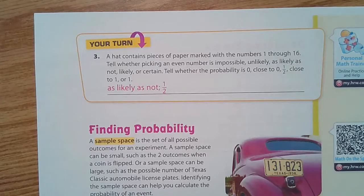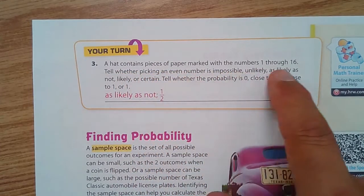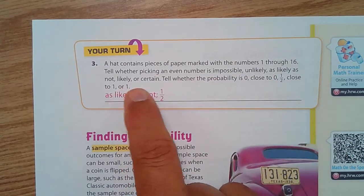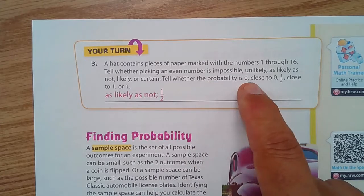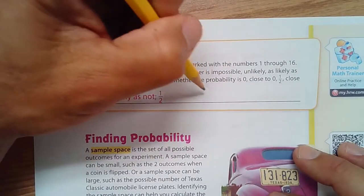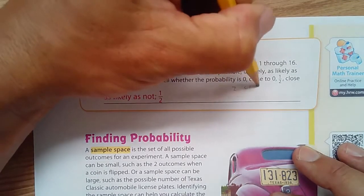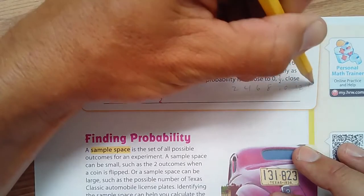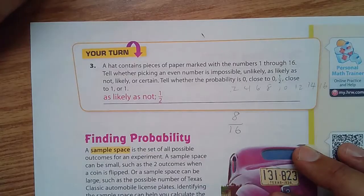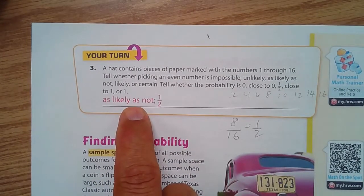Your turn: a hat contains pieces of paper marked with the numbers one through 16. Tell whether picking an even number is impossible, unlikely, as likely as not, likely, or certain. The even numbers are two, four, six, eight, ten, twelve, fourteen, and sixteen — that's eight out of 16, which equals one half. So we call that 'as likely as not' — right in the middle.